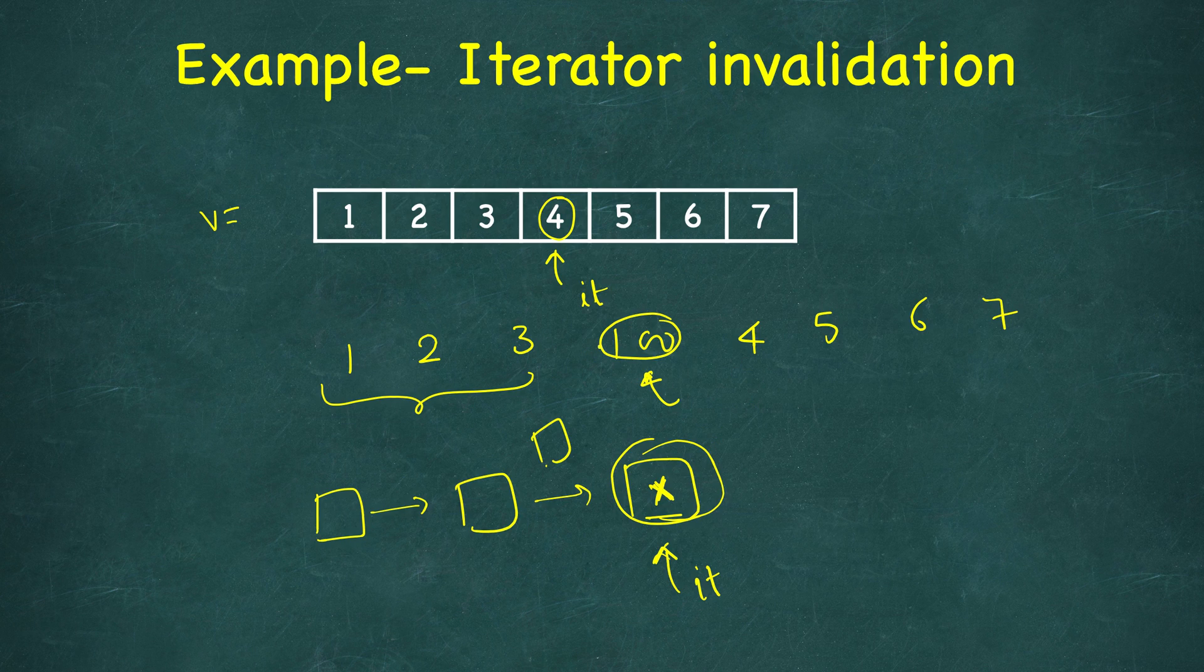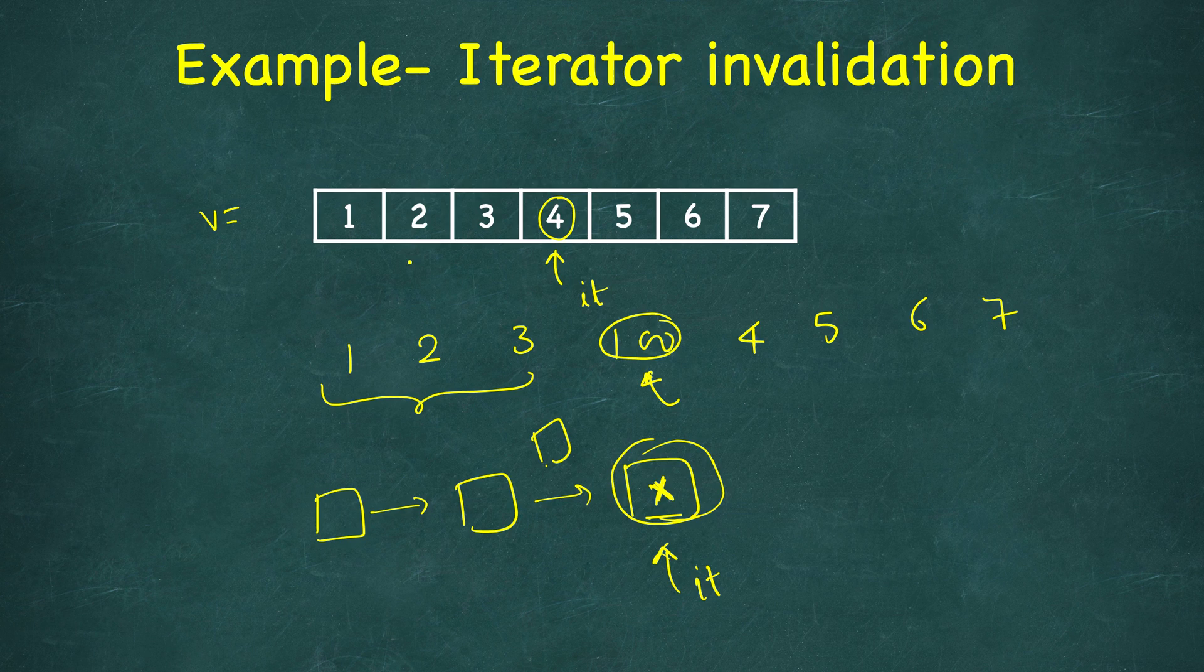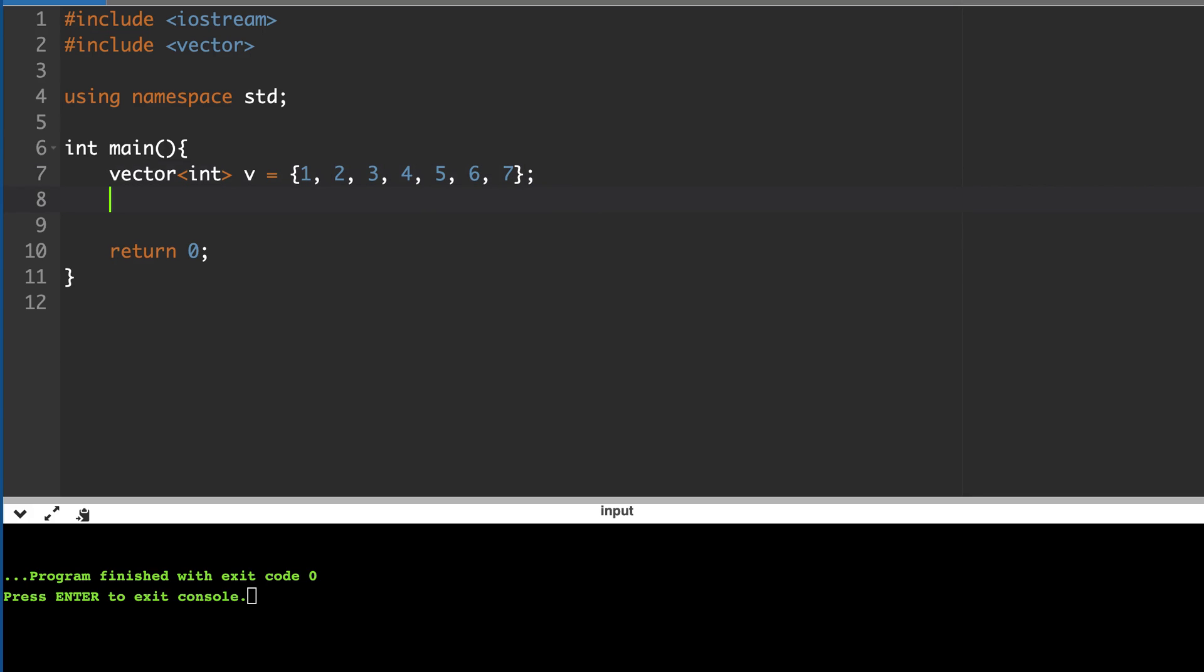So what are the different rules? Let's first look at an example where I will show iterator invalidation in the case of vectors. You will see it in action, and then we will look at what are all the different rules and different containers. First, let's look at the example. We have this vector, and then we have an iterator v.begin() plus 4. So where is it pointing? Begin is this one, begin plus 1, plus 2, plus 3, plus 4. So it's pointing to 5. So I'm just writing it 5 here, the element 5. What if I print this iterator content? We have dereferenced it and it should print 5. So let's run it and it prints 5, and it's expected.